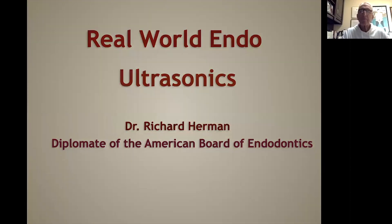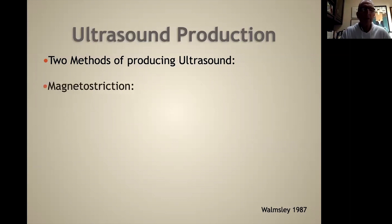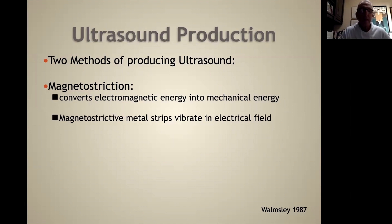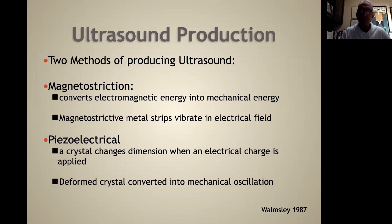When we talk about ultrasonics, we're talking about two methods of producing ultrasound. One is magnetostrictive, which converts electromagnetic energy into mechanical energy, and magnetic metal strips vibrate in the electrical field. We also have piezoelectrical, where a crystal changes dimension when an electrical charge is applied, which is the form of crystal converted into mechanical oscillation. This was shown by Wamsley in 1987.